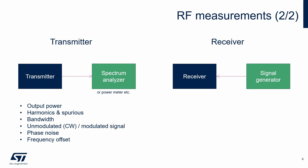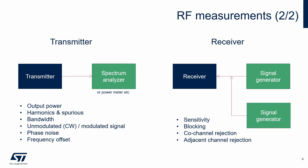In the case of receiver measurements, we need an instrument that generates a test signal — it's typically a signal generator. Using the signal generator, we can measure the fundamental parameter of the receiver, which is the sensitivity. There are also other receiver parameters like blocking, co-channel rejection, and adjacent channel rejection. To measure these parameters, an additional signal generator is needed, which causes interference on our channel.